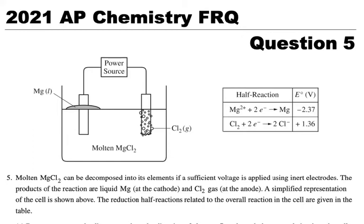We're going to look at the 2021 AP Chemistry FRQ question number five. This is electrochemistry, but we should notice this is not a battery, this is not electrochemical - this is electrolysis going on. This power source is causing these two chemical reactions to occur.